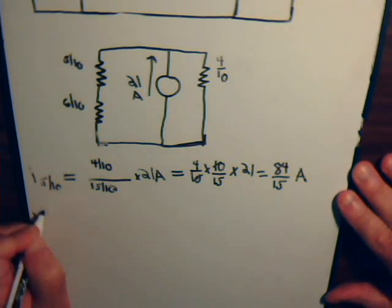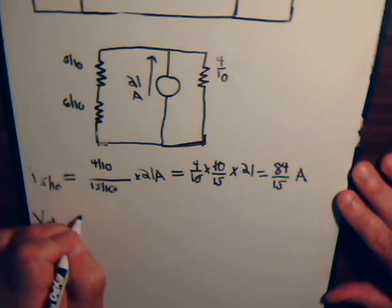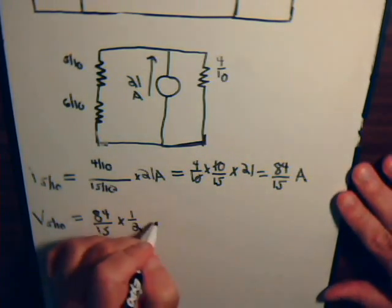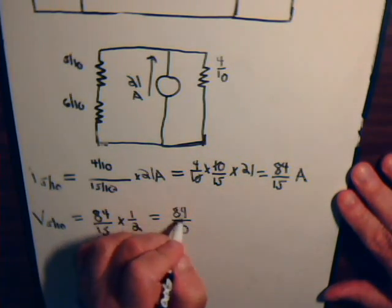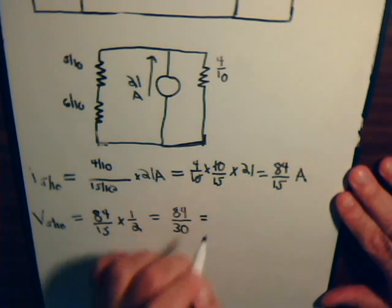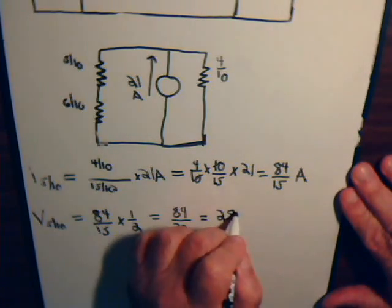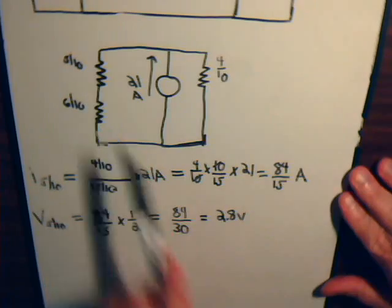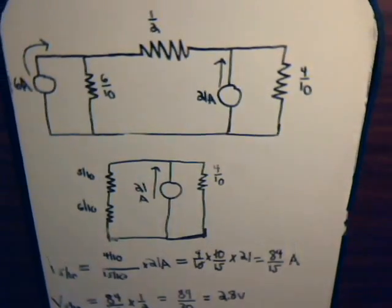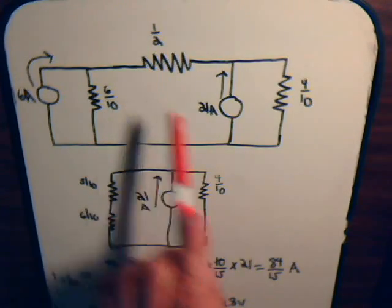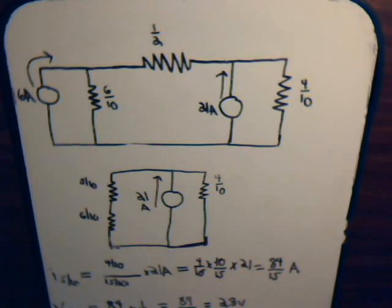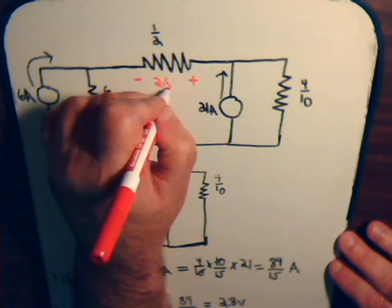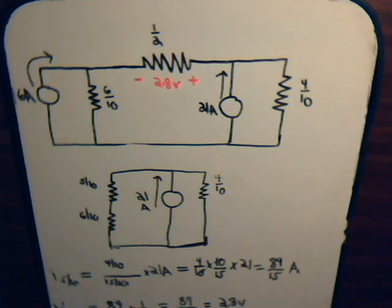The voltage drop across the one-half ohm resistor equals the current times the resistance: (84/15) × (1/2) = 84/30 = 2.8 volts. So the voltage drop across this resistor due to the 21-amp current source is 2.8 volts, with a plus-minus polarity as marked.